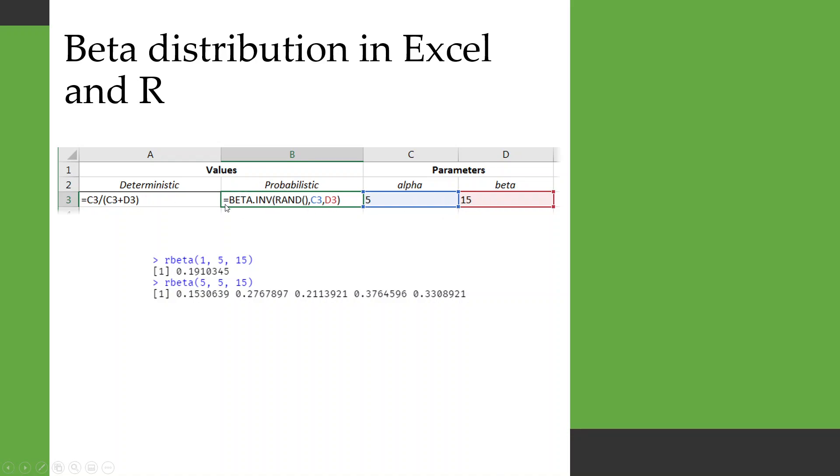For the probabilistic, we're going to use this beta.inv function, and then we're going to pass it a random number between 0 and 1 and then our two parameters. And in R, the code that you need to run is rbeta, and then you give it the number of random variables you want it to produce, and then alpha and beta are the two parameters.